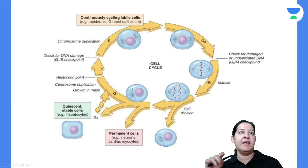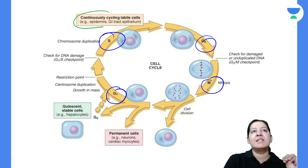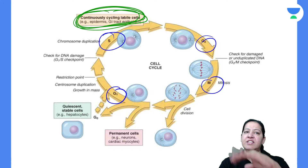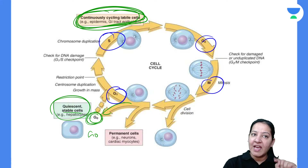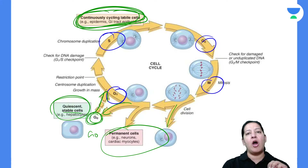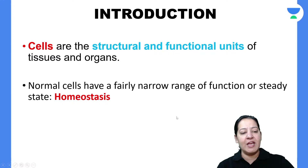In the cell cycle diagram, you can see the phases: G1, S, G2, M. Labile cells are continuously dividing, so they are in one of these phases. Stable cells are in G0 — the quiescent phase — out of the cell cycle, but they can re-enter it in response to injury. Permanent or terminal cells are out of the cell cycle and can never re-enter it.